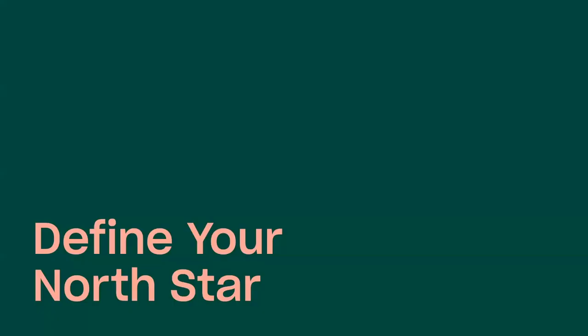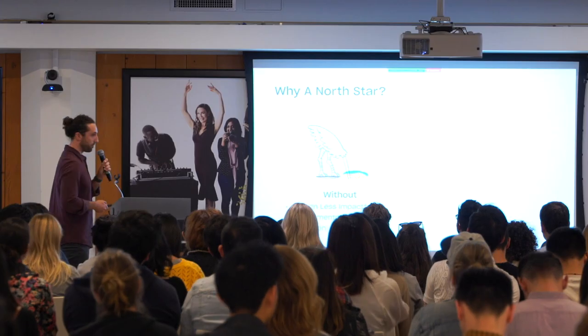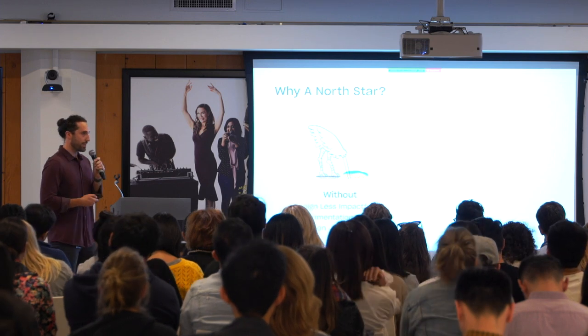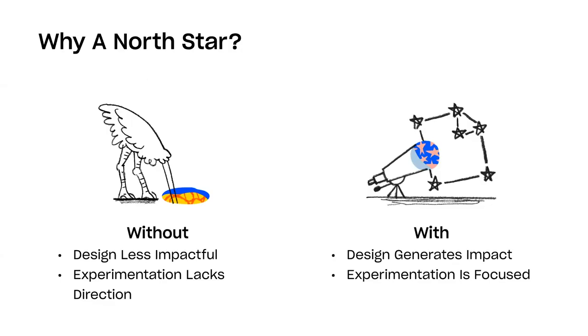Number one: defining your North Star. Without a North Star, you don't really know where you're headed. Design is less impactful because it's harder to tie design decisions to a metric, and experimentation won't have a clear direction. On the flip side, if you have a North Star, the design choices you make are aimed at moving a specific KPI — key performance indicator — and as a result, experimentation will have much more focus.